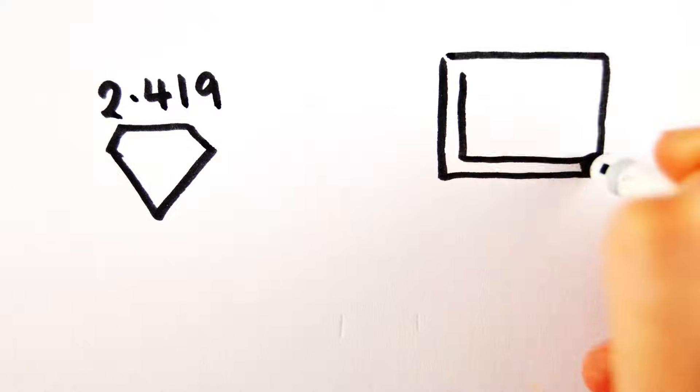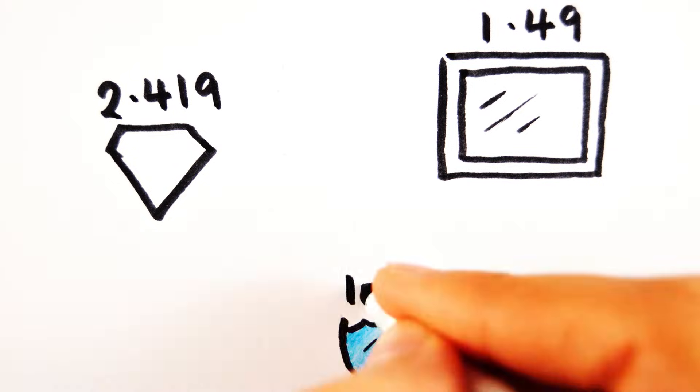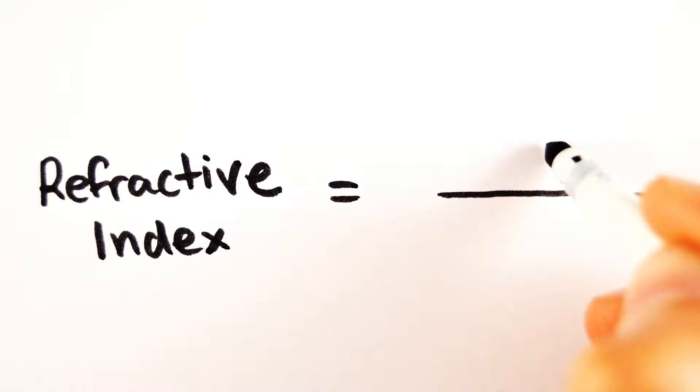Different materials have different critical angles, and it depends on the refractive index. They are related by this formula, where the refractive index is 1 over sine of the critical angle.